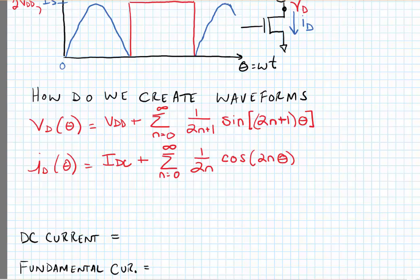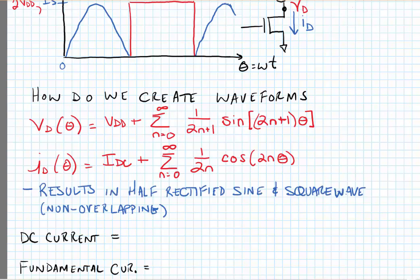This results in a half-rectified sine wave for the current and a square wave for the voltage. It's important to note that these waveforms don't overlap in the time domain, meaning that no instantaneous power is burned at the drain of the transistor.